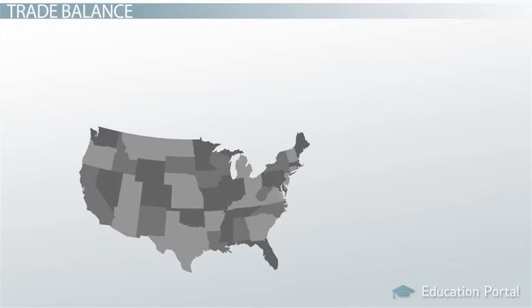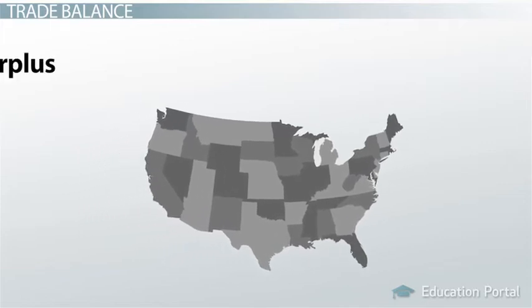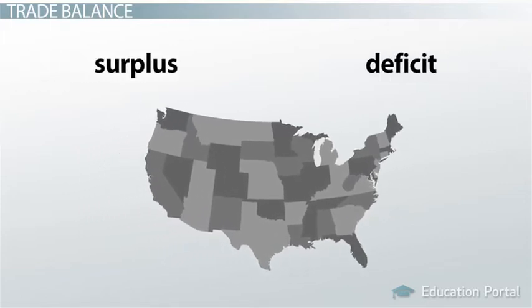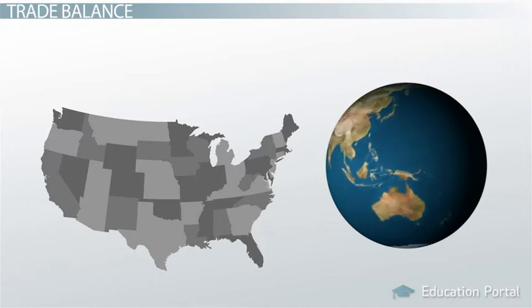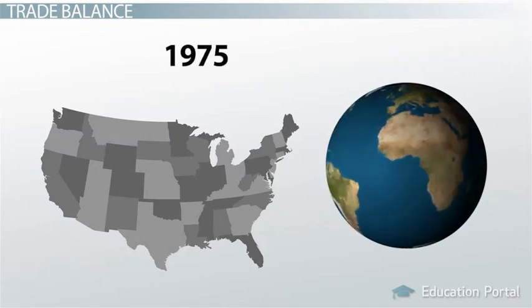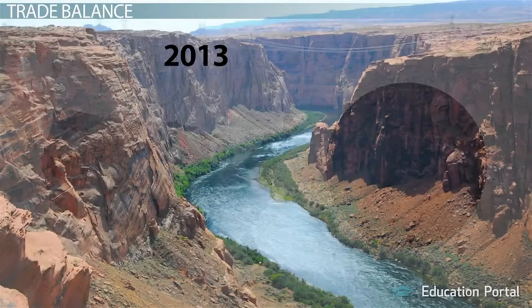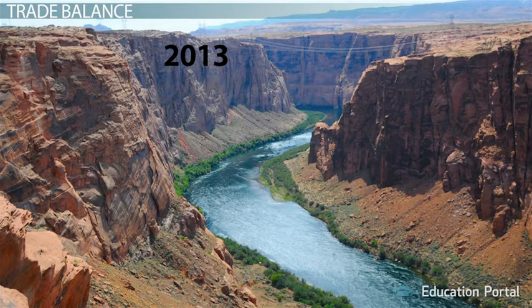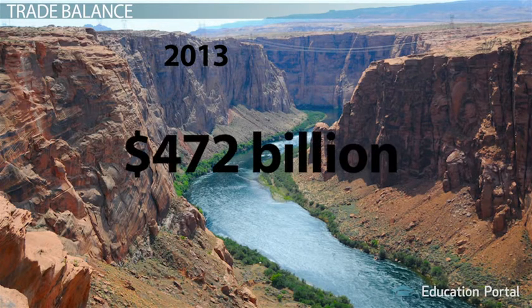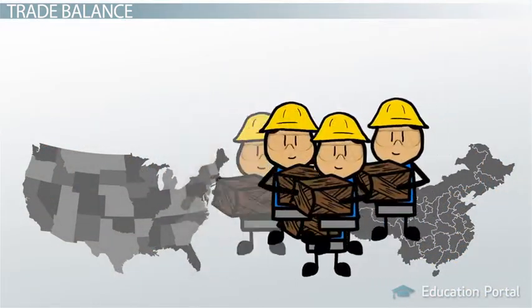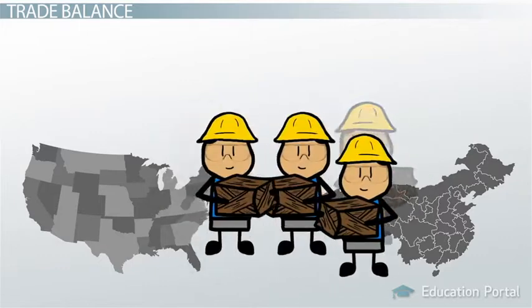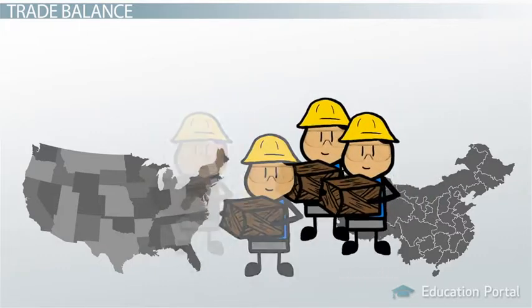Do you think the US has a trade balance surplus or deficit? If you chose deficit, you are correct. The US has the world's largest trade deficit and has run a trade deficit since 1975. In 2013, the deficit in goods and services was more than $472 billion. That means we imported and bought a lot more electronics, raw materials, oil, and other goods than we sold to foreign countries.